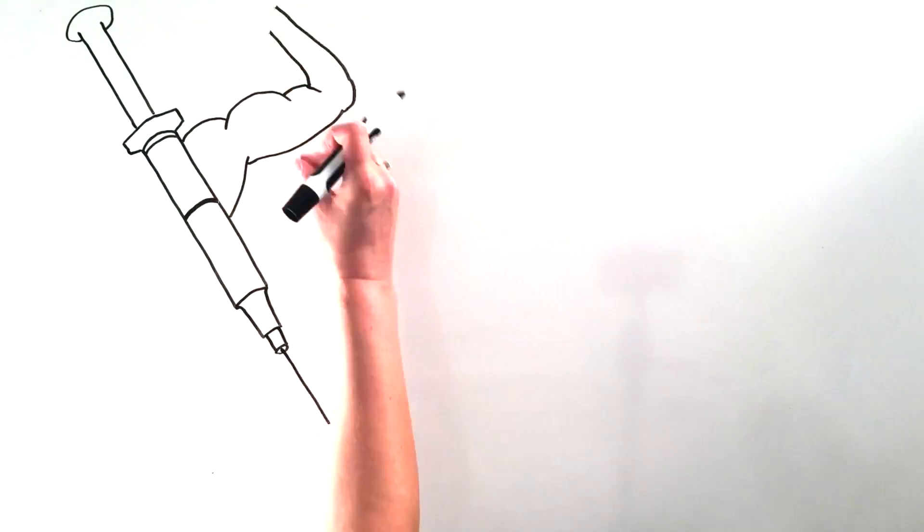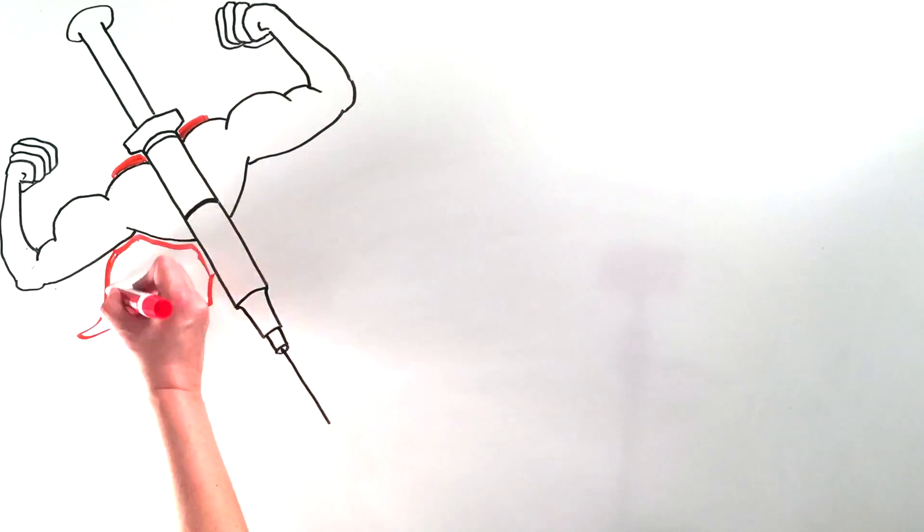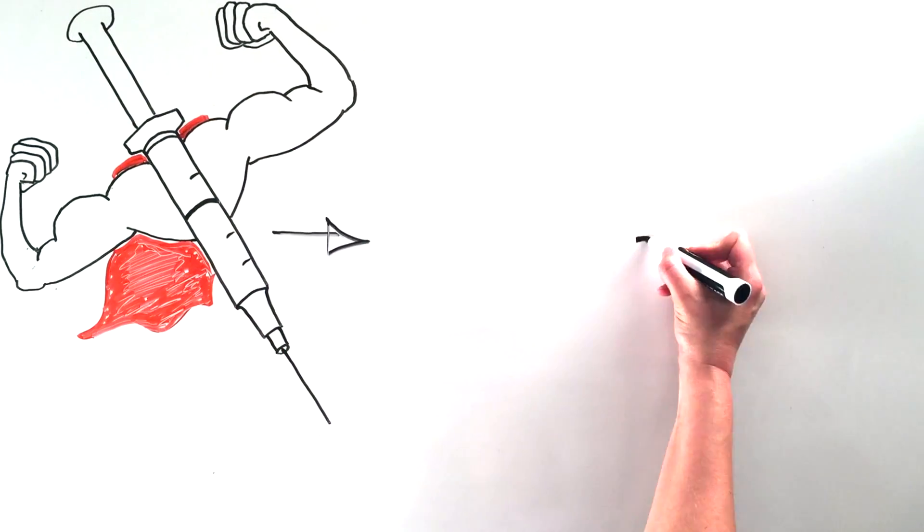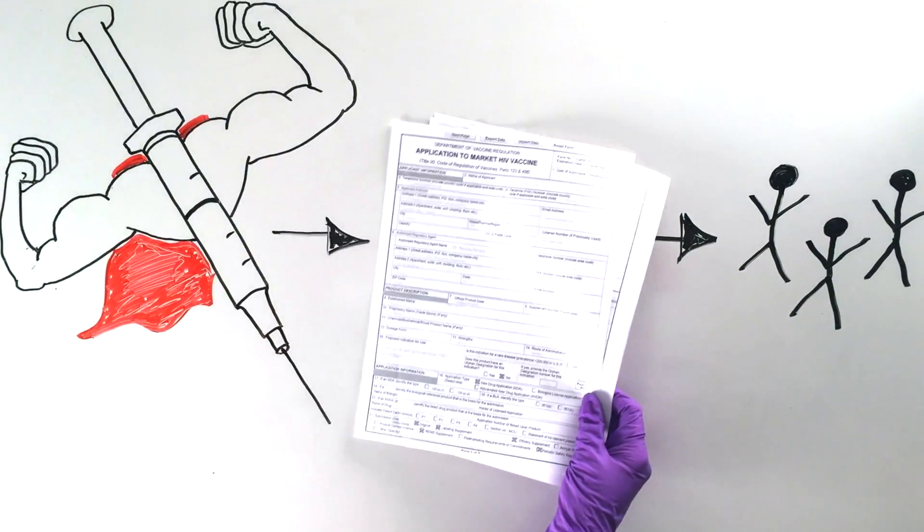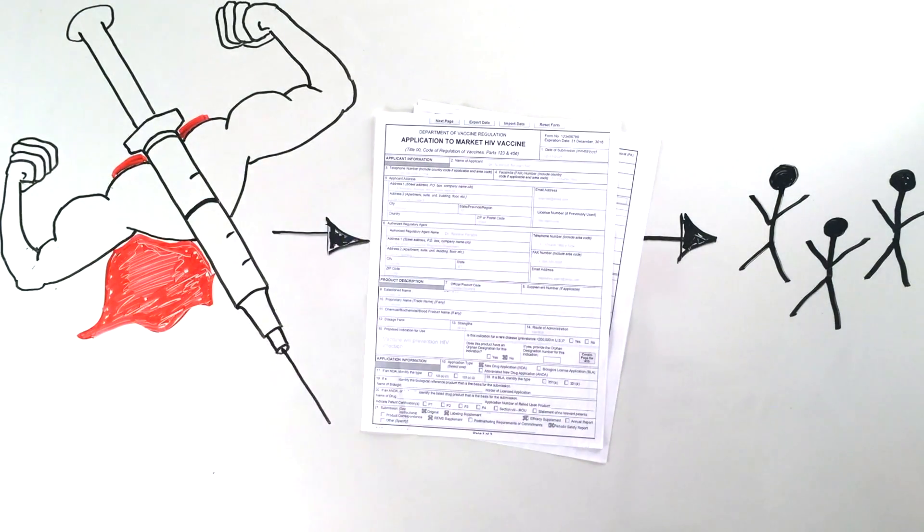If the vaccine offers substantial protection, making it available to more people would be the next step. After additional studies, scientists may submit the data to regulators for potential licensure of the vaccine.